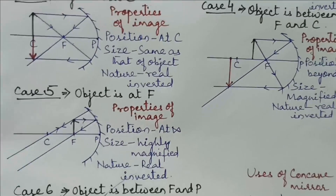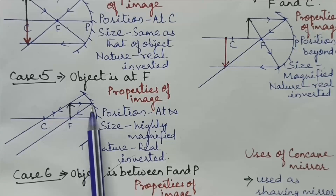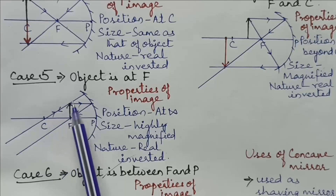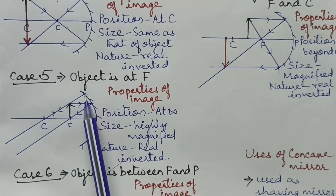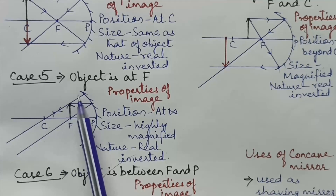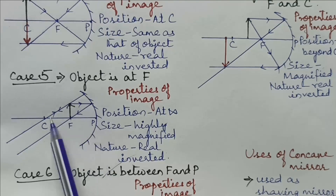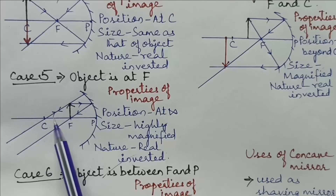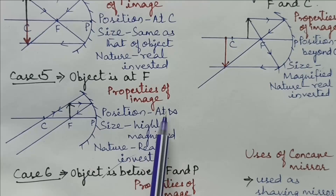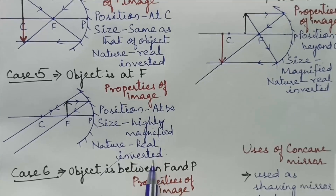Case 5: When the object is placed at focus. The first ray coming parallel to principal axis after reflection passes through focus. The second ray passing through center of curvature after reflection moves along the same path, as the ray of light meets the surface of mirror normally and retraces its path. As the two rays travel parallel to each other, the position of image formed is at infinity. The size is highly magnified and the nature of image formed is real and inverted.